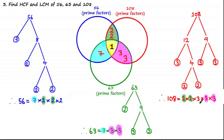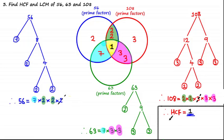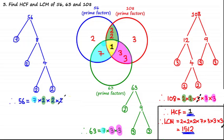There is a 3 which is a prime factor of 108 and none of the others, so it goes in the 108-only region. There is a 2 which is a prime factor of 56 and none of the others, so it goes in the 56-only region. As 1 is the only number in the intersection of this Venn diagram, the highest common factor is equal to 1. The lowest common multiple is 2 times 2 times 2 times 7 times 3 times 3 times 3 times 1, which equals 1,512.